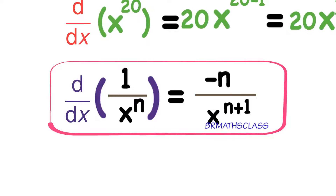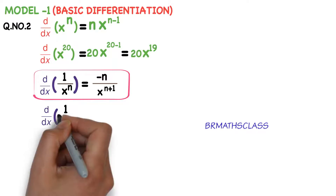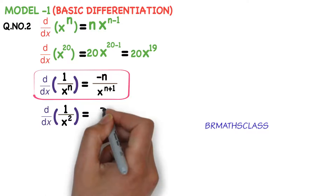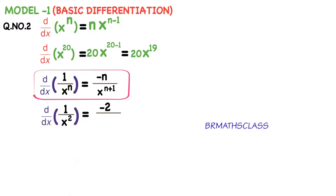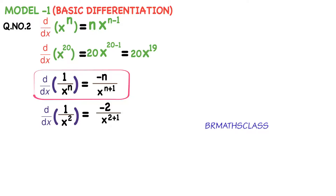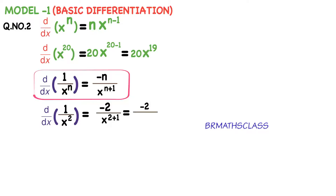We very frequently use this formula. d by dx of 1 divided by x power 2 — compare this with 1 by x power n and apply the formula. You get minus 2 divided by x power 2 plus 1, which is minus 2 divided by x cube. So the derivative of 1 by x square is minus 2 divided by x cube.